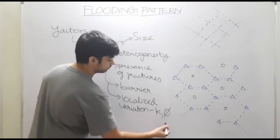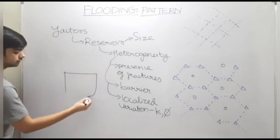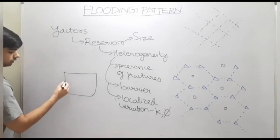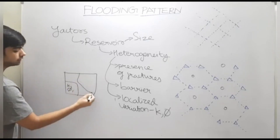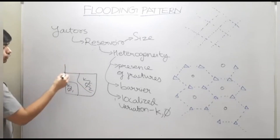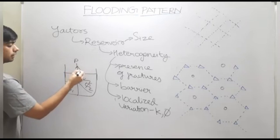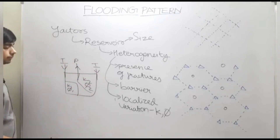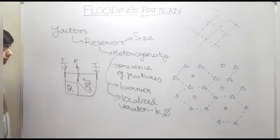Heterogeneity can also include localized variation of reservoir properties such as permeability, porosity, and other petrophysical properties. For example, consider a reservoir where one portion has different permeability and porosity compared to another portion. If we place a producer well and two injector wells and inject water at the same injection rate without analyzing the porosity and permeability at different regions, we can have ineffective recovery of oil.